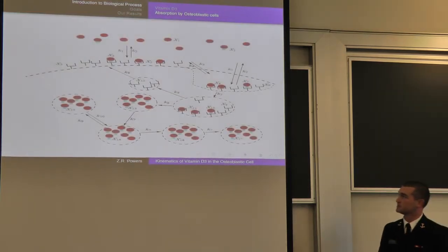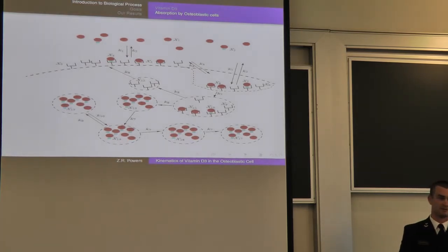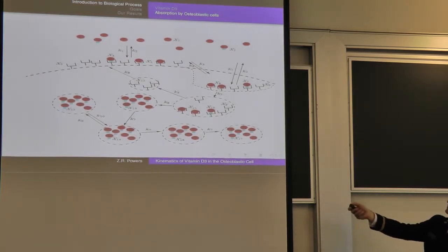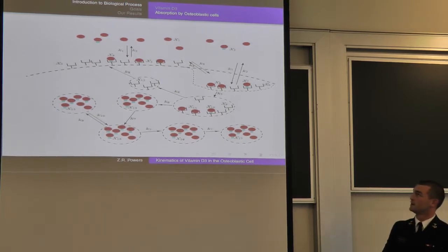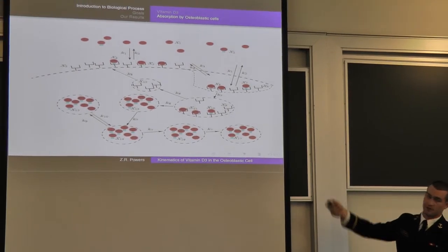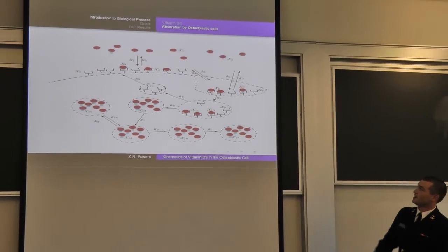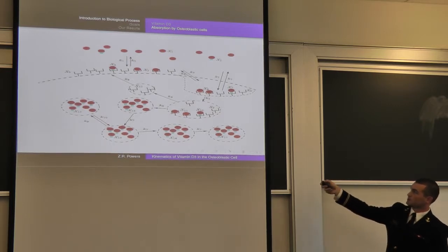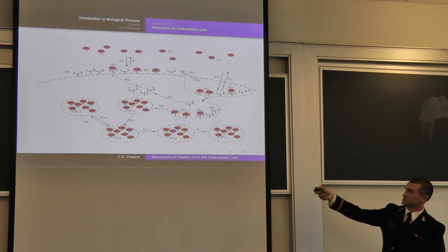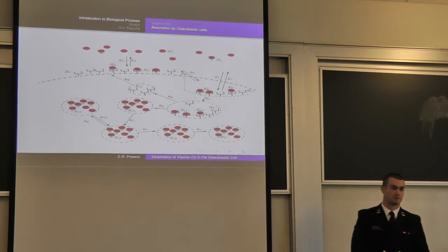This is a basic diagram of how the process of absorption works. Up top is the bloodstream. The big pink circles are the D-binding protein, and the little green squares are the vitamin D25. As you can see, there is much more D-binding protein than there is 25D, so all of the 25D in the bloodstream is bonded to D-binding protein. There are two main areas of the cell we're concerned with: the buffer region, taken from Petrushinib's initial model for cell absorption, and the coated-pits region.